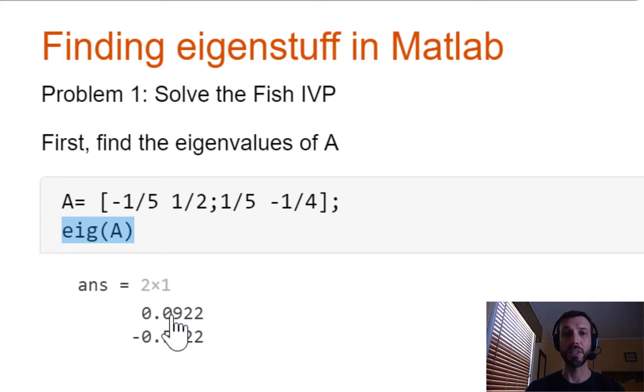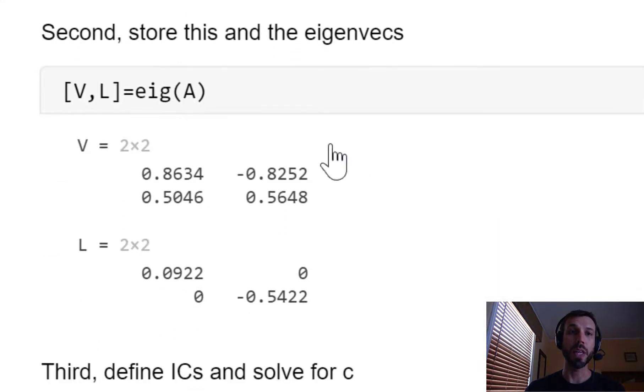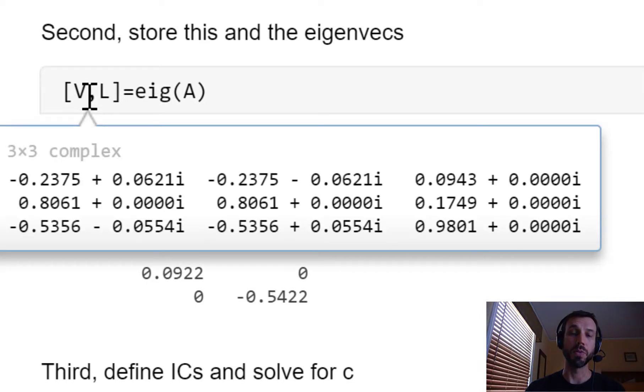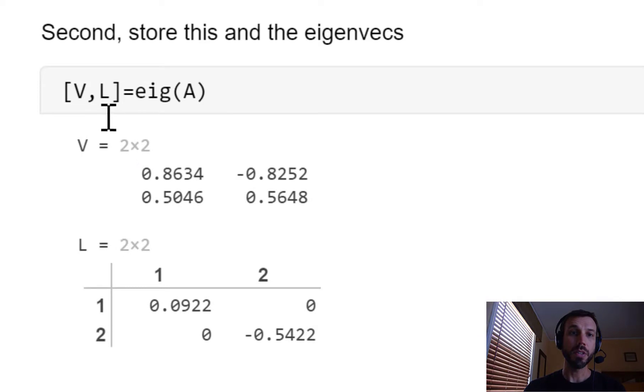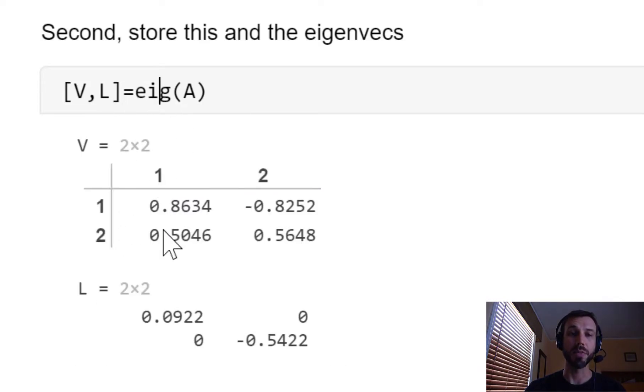To back up this observation and to compute the full solution as well as the eigenvectors, we can rerun the eig function but store the output now into two variables which we'll call V and L. When you use this format, the output V and L will display as follows: V will be a two by two matrix whose columns give the eigenvectors of A, and L will be a two by two matrix whose diagonal elements give the eigenvalues.